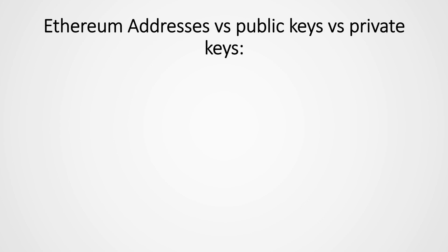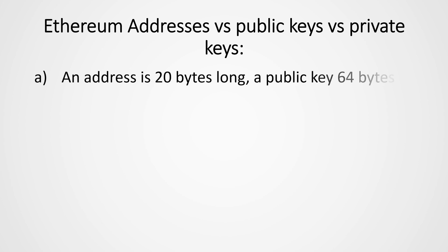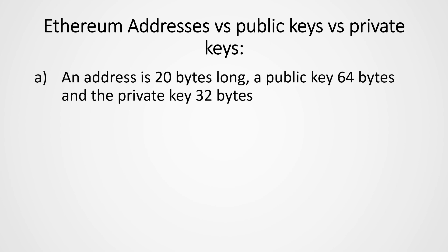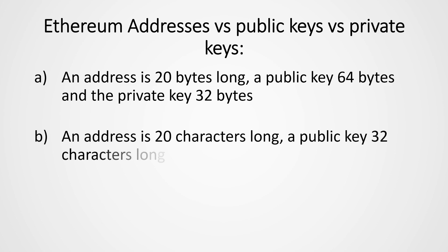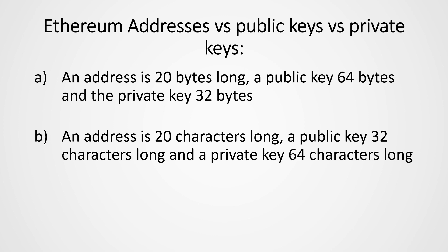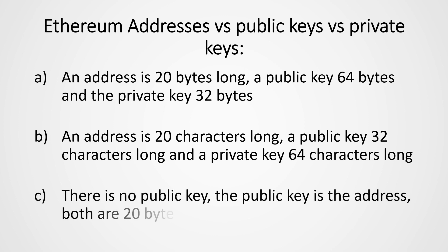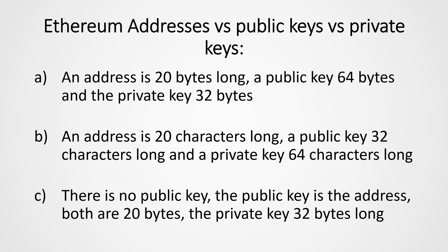Did you get this right? Ethereum addresses versus public keys versus private keys — which answer is correct? A: An address is 20 bytes long, a public key is 64 bytes, and the private key is 32 bytes long. B: An address is 20 characters long, a public key is 32 characters long, and a private key is 64 characters long. C: There is no public key — the public key is the address, both are 20 bytes, and the private key is 32 bytes long.